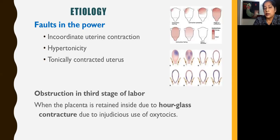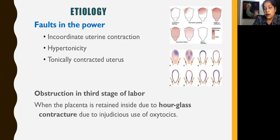Faults in power: incoordinate uterine contractions, hypertonicity of the uterus, or a tonically contracted uterus can cause obstruction. At times we have heard of obstruction in the third stage of labour — when the placenta is retained inside and there is an hourglass contracture due to injudicious use of oxytocin. This is called obstruction of the third stage of labour, but in these cases the baby has already delivered.